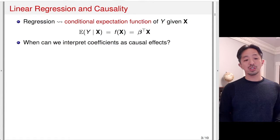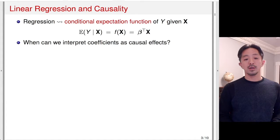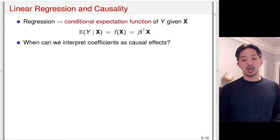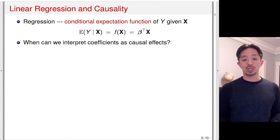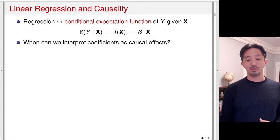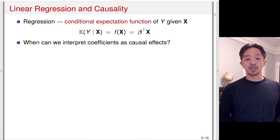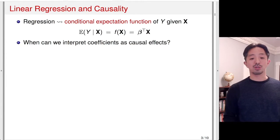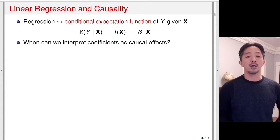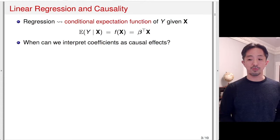The question is: when can we interpret these coefficients as causal effects? The statistical model in itself cannot distinguish between causality and association, so it requires some assumptions in order for us to be able to interpret these parameters as causal effects.